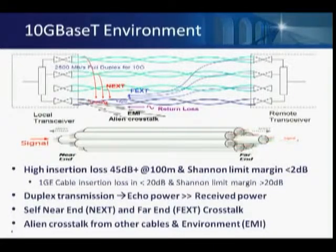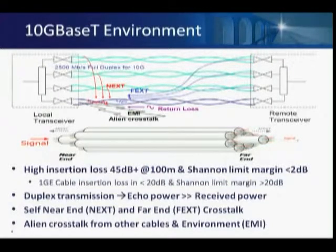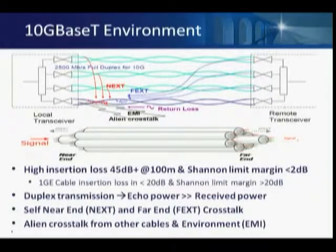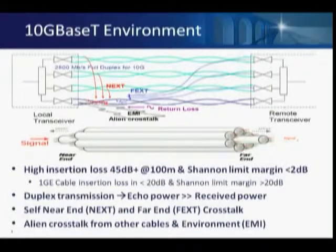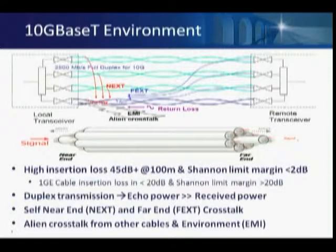The insertion loss for 10G base-T at Nyquist is about 45 dB, compared to about 20 dB for gigabit at Nyquist. The Shannon limit margin for 10G base-T is less than 2 dB — the IEEE standard pressed as much as possible into the wire, getting very close to the Shannon limit, whereas the previous generation had greater than 20 dB margin. Echo power at the end of a 100-meter cable is about 6 to 9 dB greater than the signal power. Near-end and far-end crosstalk are significant and must be cancelled, and alien crosstalk from the adjacent six-around-one configuration must be accounted for in chip design.